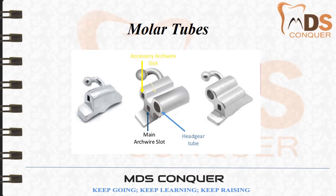Molar tubes are passive components of the fixed orthodontic appliances. They are available in different configurations — single slot, double slot, or triple slot. In the triple slot, there is a main arch wire slot, an accessory arch wire slot, and a headgear tube slot through which the headgear wire bow passes.